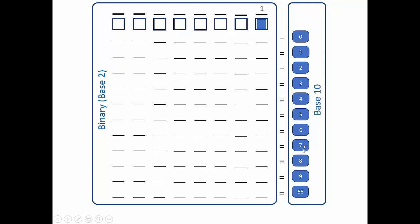On the left side where it says binary, or base 2, only ones and zeros are used. On the right side is our base 10, which is how we were taught to count. In base 10 there are 10 numbers: 0, 1, 2, 3, 4, 5, 6, 7, 8, 9, and then we repeat. In base 2, we're only using two numbers — 1 and 0 — to represent information.